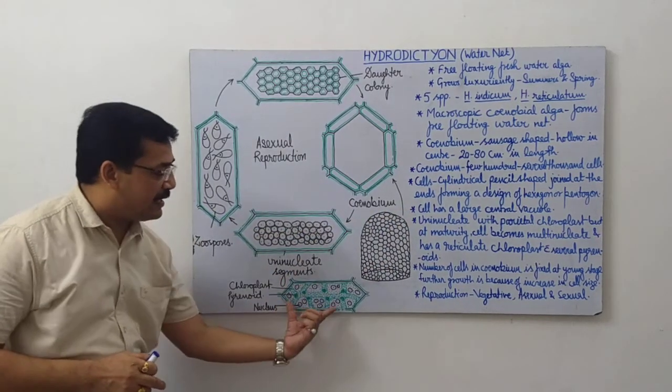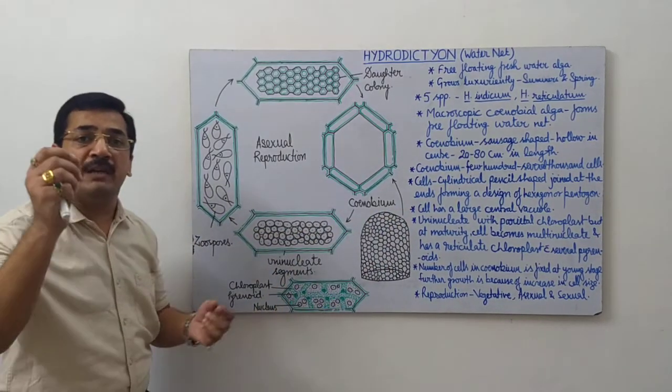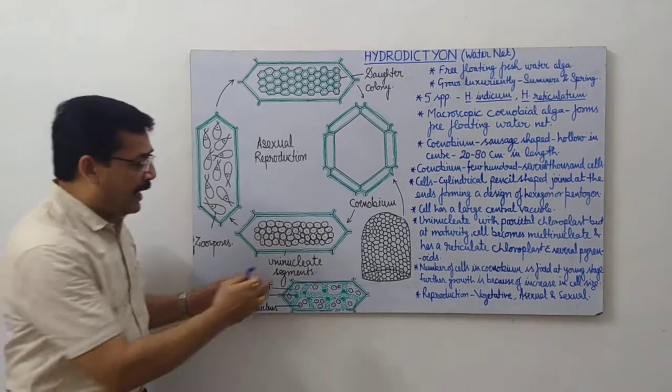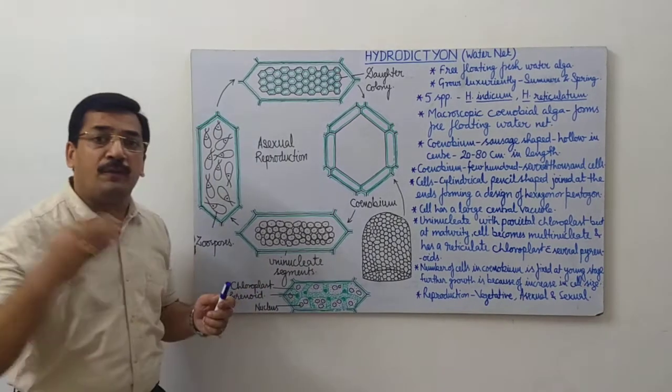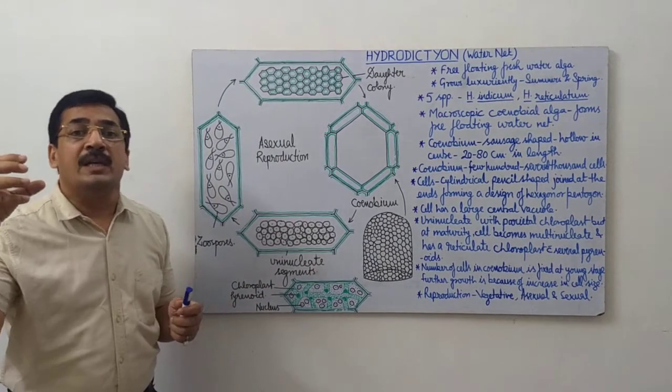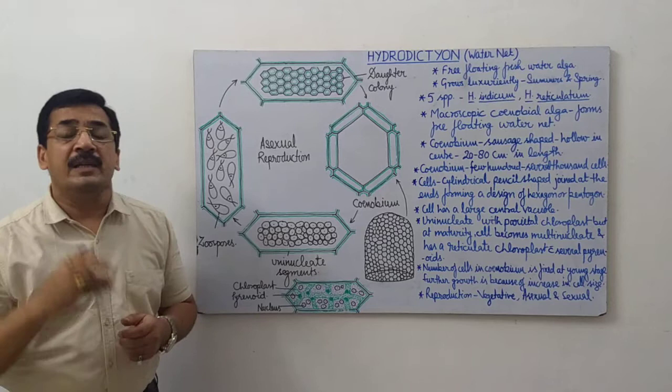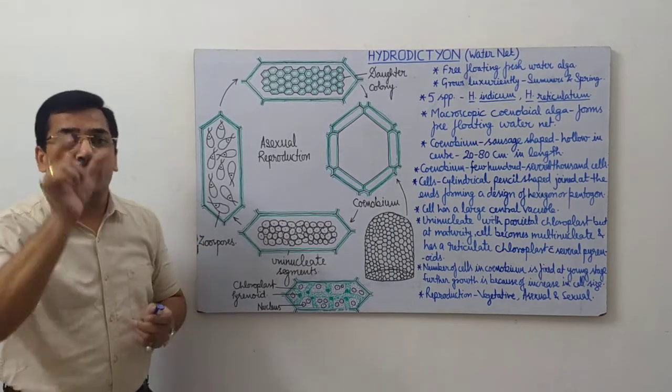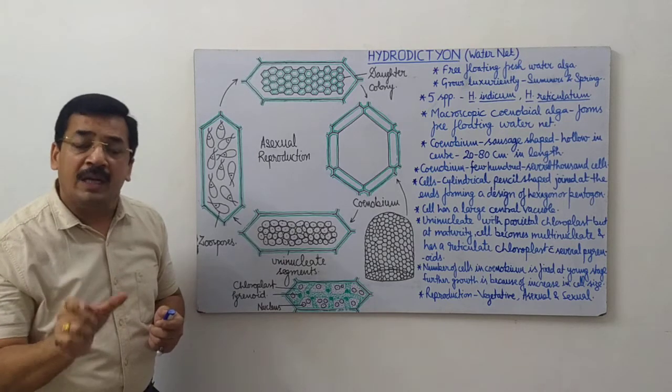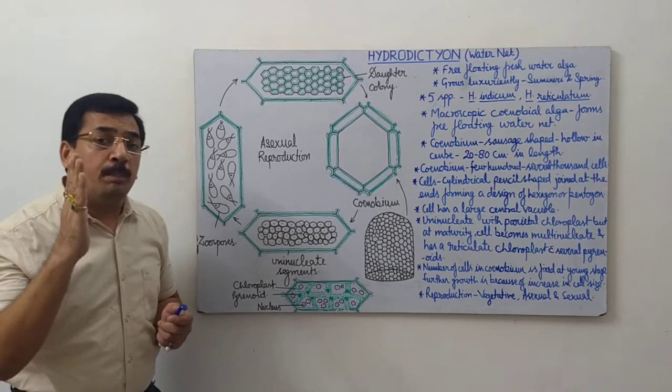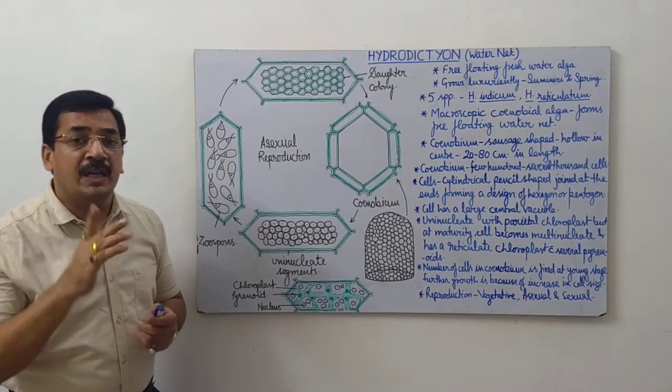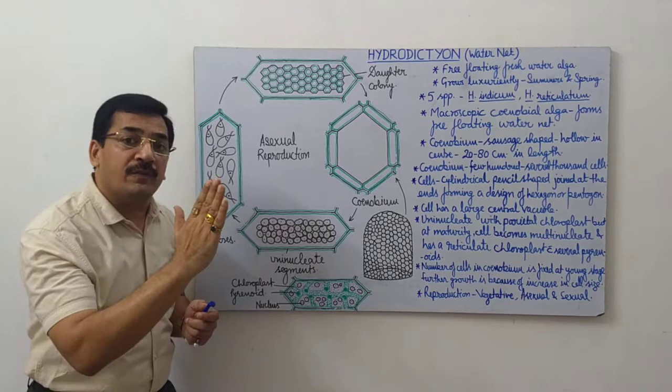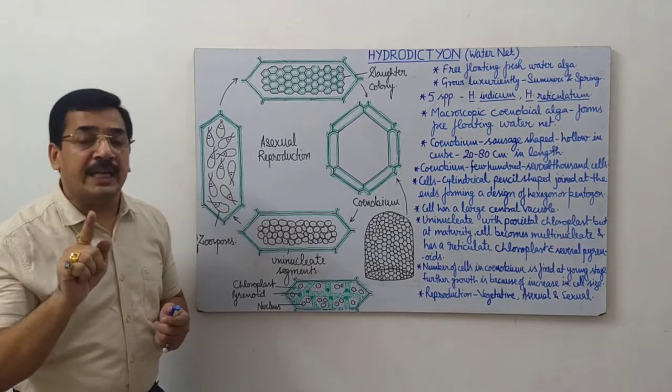Each cell has a central vacuole. Whenever you see a single cell, it is almost rectangular in shape and consists of a central vacuole. The major central part of the cell is occupied by a vacuole, and the protoplast of the cell is always present between the wall of the vacuole and the wall of the cell in the form of a layer.